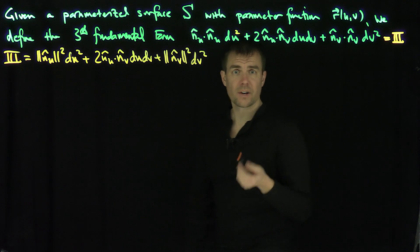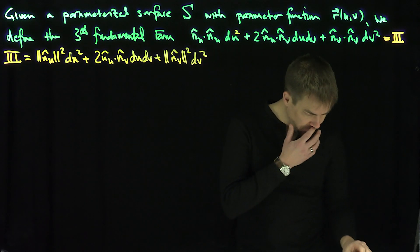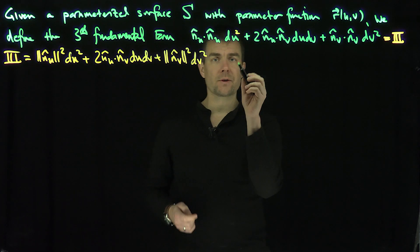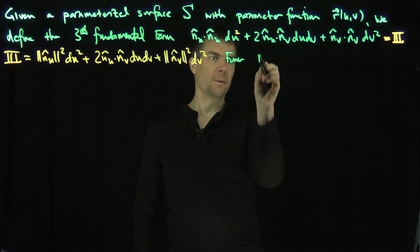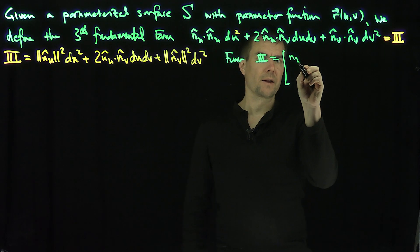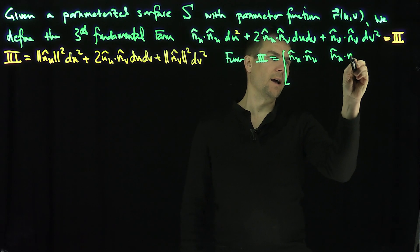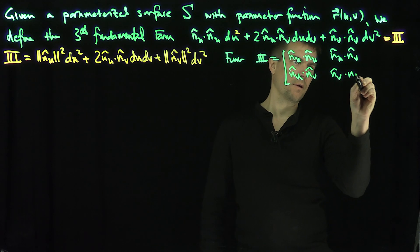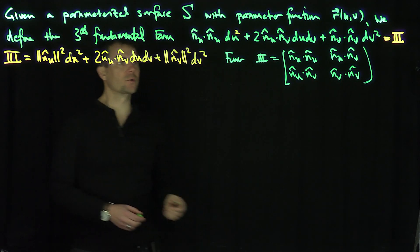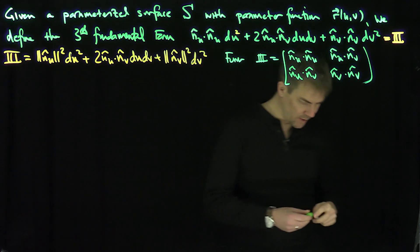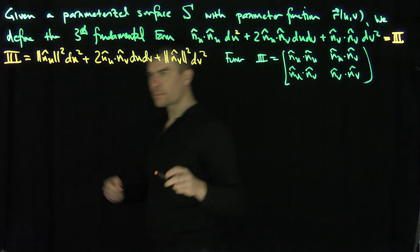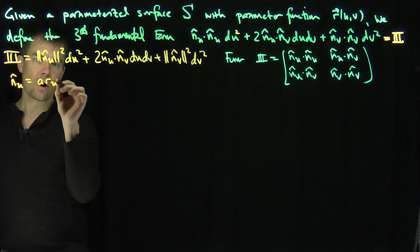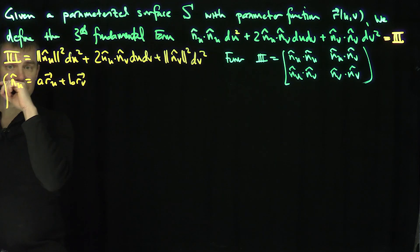I'd like to relate the third fundamental form to the first and second fundamental forms. One thing we can do is use matrix calculations to our advantage. We form the matrix III, which is N_U hat dot N_U hat, N_U hat dot N_V hat, N_U hat dot N_V hat, N_V hat dot N_V hat. Now let's write down the decomposition of N_U in terms of R_U and R_V. We recall that N_U hat can be written as A·R_U plus B·R_V because it's in the tangent space.